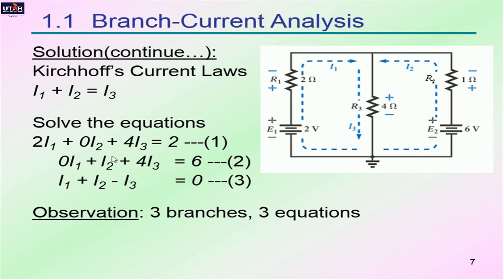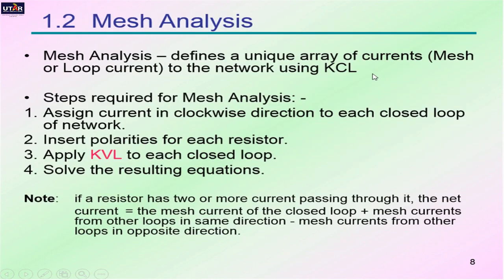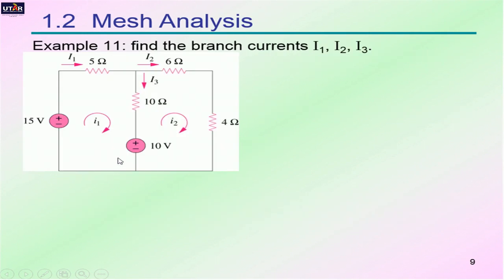That's how branch current analysis works. It's a bit tedious because you need to form three sets of equations, which is why I recommend mesh analysis — it's simpler. The steps for mesh analysis are: assign current in the clockwise direction to each closed loop, insert polarities for each resistor, apply Kirchhoff's voltage law to each closed loop, and solve the resulting equations. In this example, similar to the previous one, there are two meshes, so you only need two equations — much simpler.